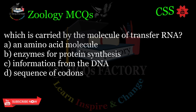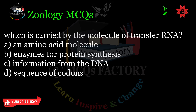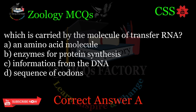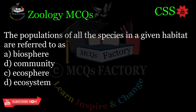Which is carried by a molecule of transfer RNA? A. An amino acid molecule. B. Enzymes for protein synthesis. C. Information from the DNA. D. Sequence of codons. Correct answer: A.